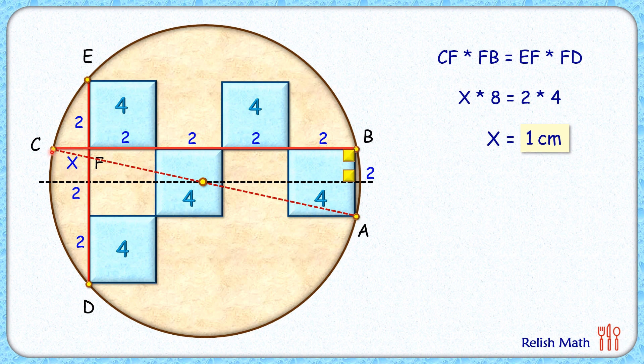Now in this triangle CBA applying Pythagoras theorem we get (2R)² equals 9² plus 2². Solving it we get (2R)² equals 85, or R equals square root of 85 by 2 cm, and that's our answer.